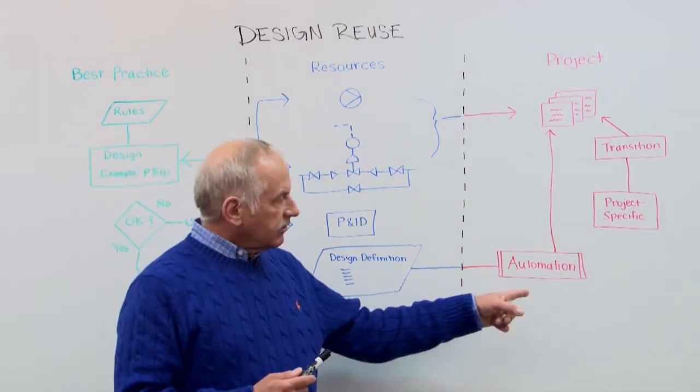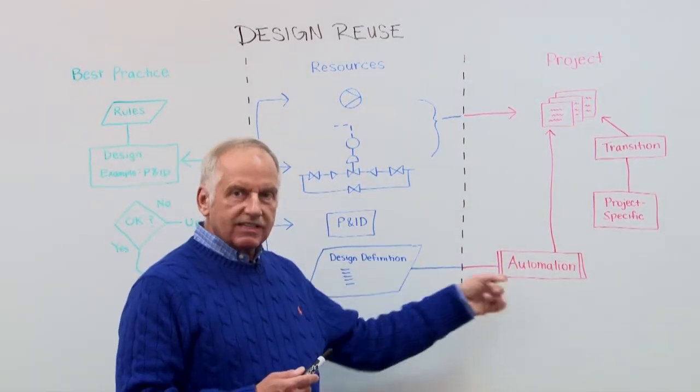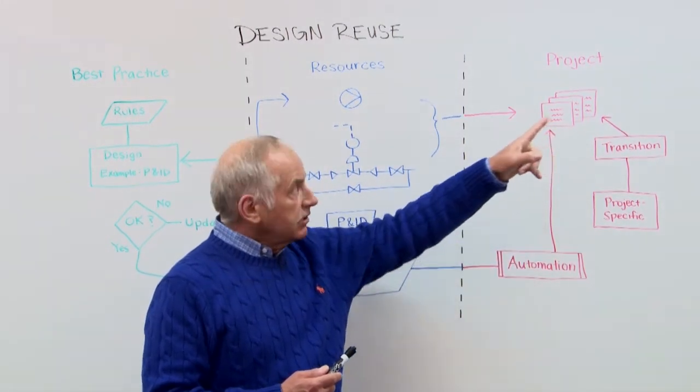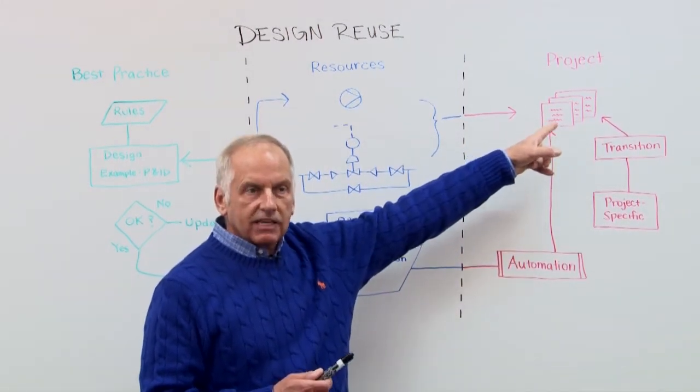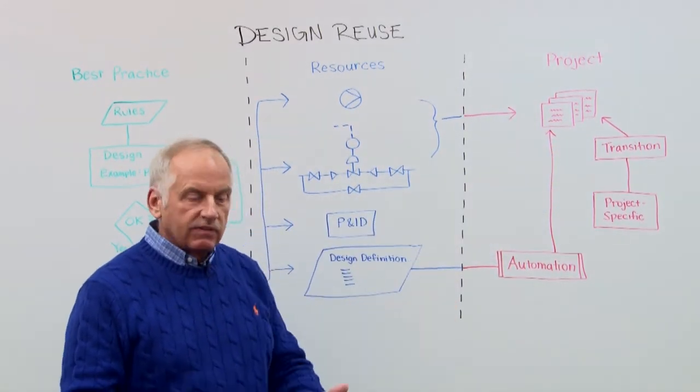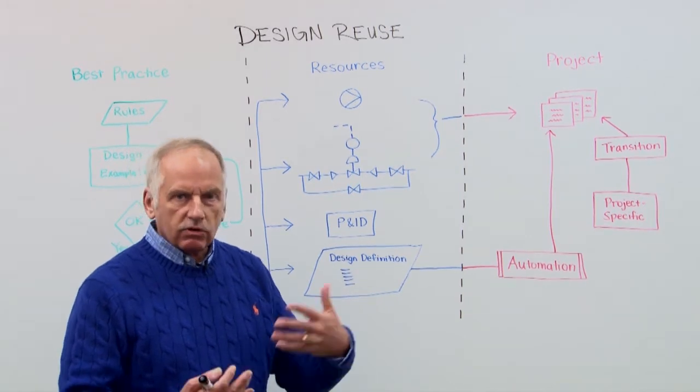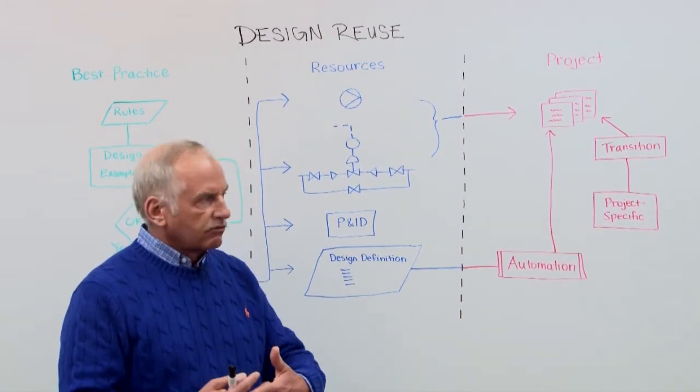And then what you can do through automation is use the definition and create automatically the P&IDs. Now this is done for the project. Well, the project has its own specifics like tag numbers. And maybe there are some different standards because the location is different than the one you copied it from.